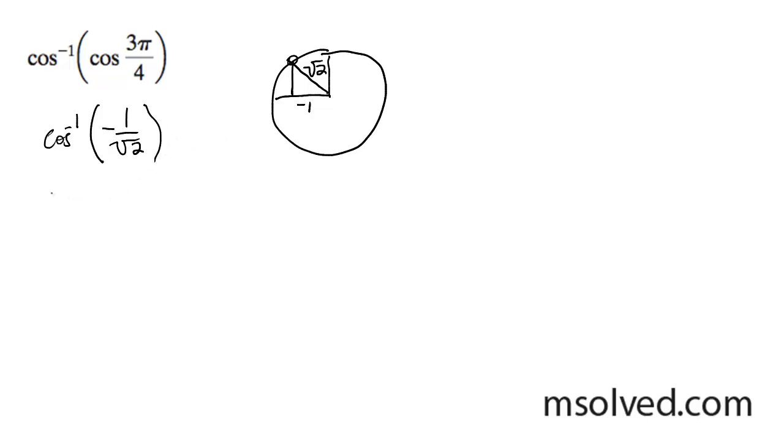So what this means is the same thing as doing cosine of x, cosine of this is equal to x, and then we can just go ahead and get rid of the inverse, and we get cosine of x is equal to negative 1 over root 2.